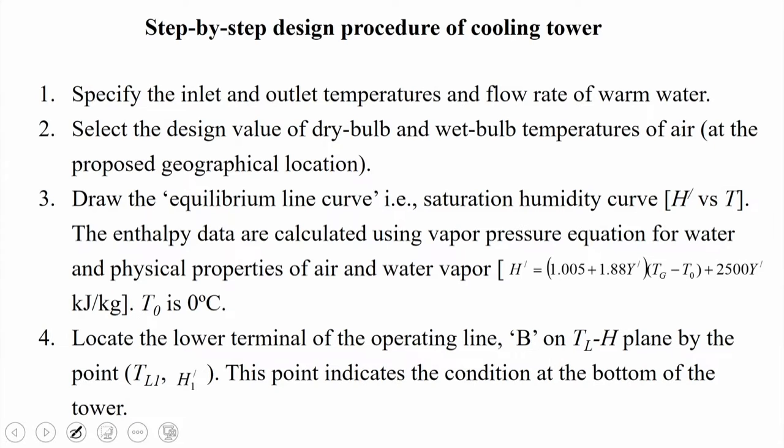The third step is to draw the equilibrium line curve, that is the saturation humidity curve, which is H' versus temperature. The enthalpy data are calculated using the vapour pressure equation and physical properties of air and water vapour: H' = (1.005 + 1.88·Y') × (Tg − T0) + 2500·Y', in kJ/kg, where the reference temperature T0 is taken as 0°C.